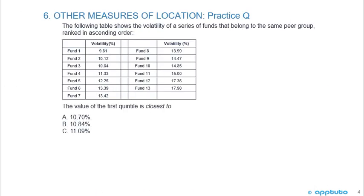We're going to finish this LOS with a practice problem. The following table shows the volatility of a series of funds that belong to the same peer group, ranked in ascending order. We have 13 funds. The value of the first quintile is closest to: A) 10.7%, B) 10.84%, or C) 11.09%.